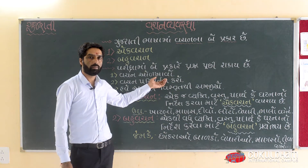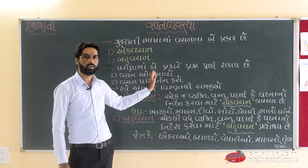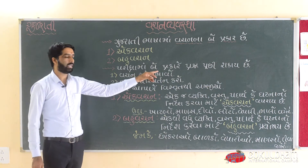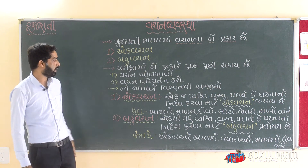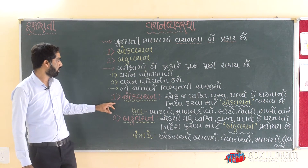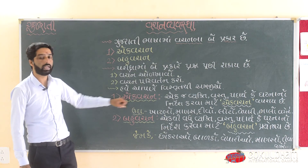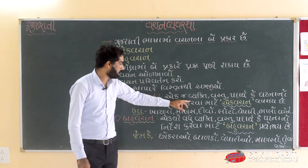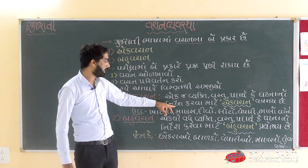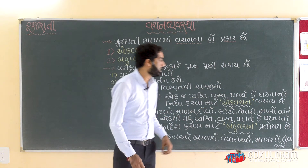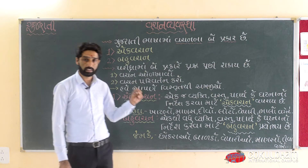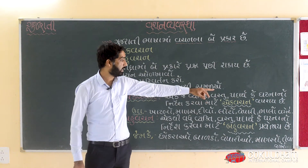So, if we have one person, we have to do one person. So, we have to ask you a question. As one person, the second person is number 1. We have to ask you a question — તો એક જ વ્યક્તિ, વસ્તુ, પ્રાણી કે ઘટનાનો નિર્દેશ કરવા માટે એક વચન વપરાય છે.